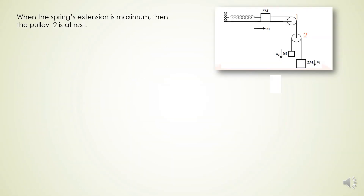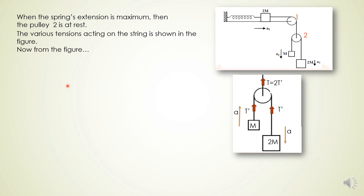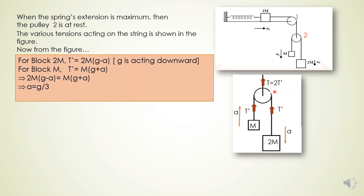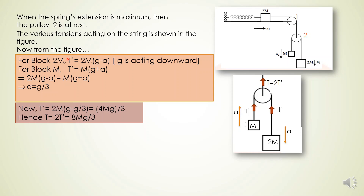When the spring extension is maximum, pulley 2 is at rest. The various tensions acting on the string are shown in the figure. For block 2m, the tension T' equals 2m times (g minus a). Equating the two expressions for T' gives the acceleration a equal to g by 3. Substituting this value of a back gives T' equal to 4mg by 3, and hence the total tension T on the string is 2 times T', which equals 8mg by 3.